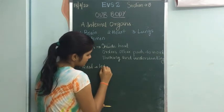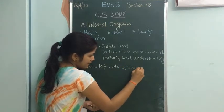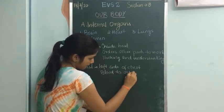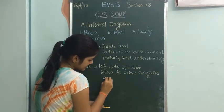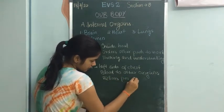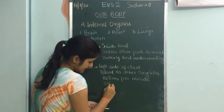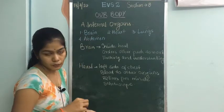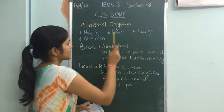To summarize about the heart: it is present on the left side of the chest, it supplies blood to all other organs, it beats 72 times per minute, and doctors use the stethoscope to measure how many times the heart beats per minute.